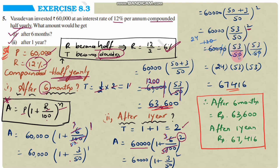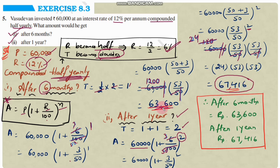After cancellation: 60,000 divided by 50 × 50 simplifies step by step giving 24 × 53 × 53 = 67,416 divided by 1 = rupees 67,416. Therefore after 6 months we get rupees 63,600 and after 1 year we get rupees 67,416.